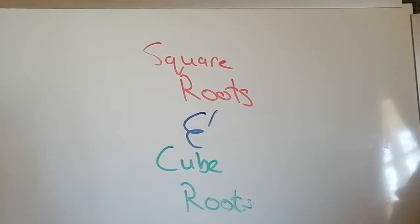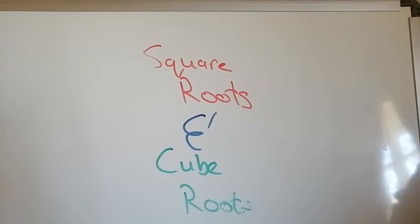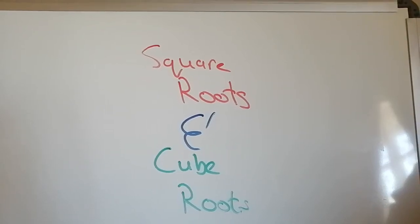In the previous video on exponents we called the base number, or the number that was being multiplied by itself, the root. The root is the number we always come back to.